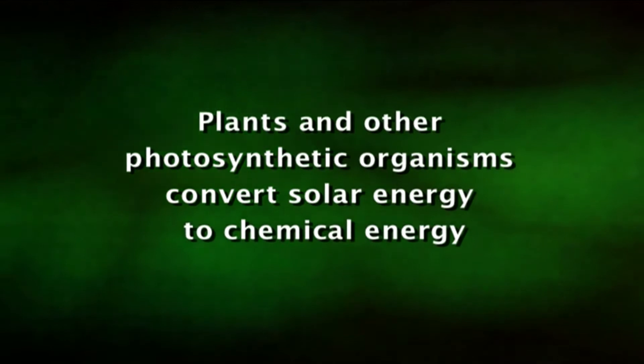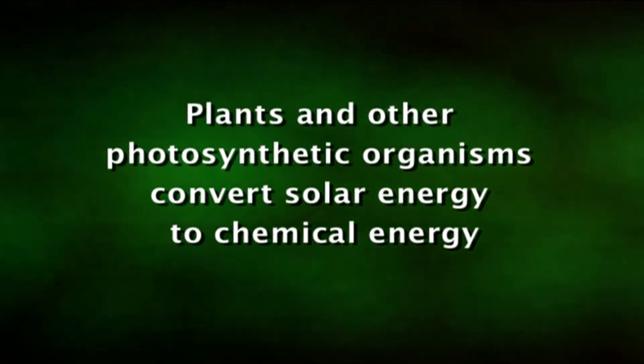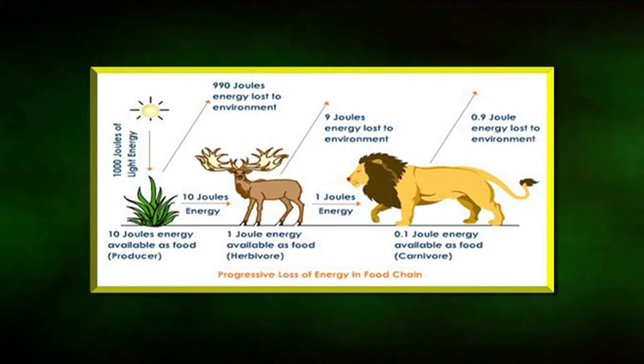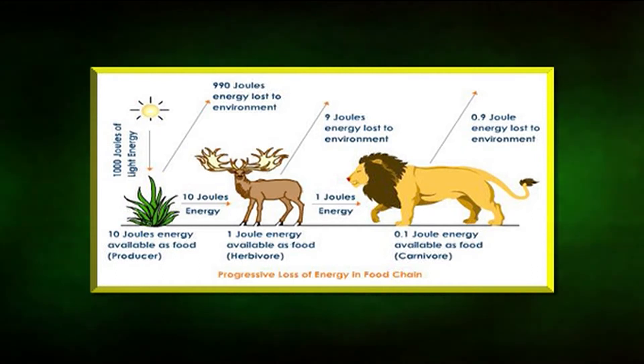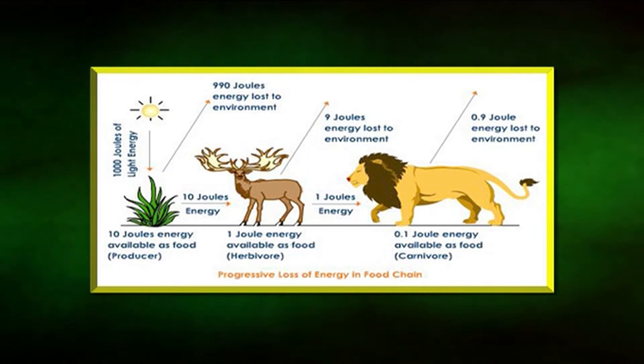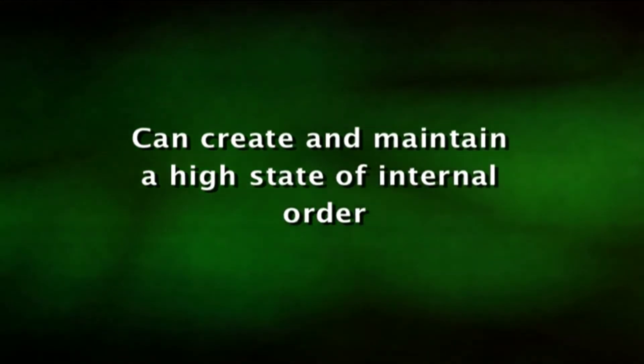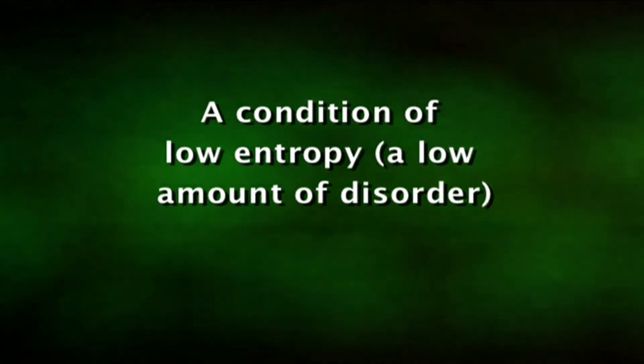Plants and other photosynthetic organisms convert solar energy to chemical energy, but the total amount of energy does not change. The total amount of energy stored in organic molecules plus the amounts reflected and dissipated as heat must equal the total solar energy intercepted by the plant. The second law of thermodynamics states that no process involving an energy transfer will spontaneously occur unless there is degradation of energy from a concentrated form into a dispersed form. Every ecosystem possesses certain thermodynamic characteristics and can create and maintain a high state of internal order, or a condition of low entropy, a low amount of disorder.